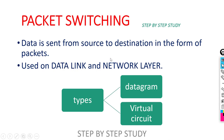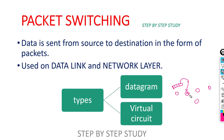If you have two communication devices, for example computer A sending data to computer B, then it will break that data into small packets. The packets will be transferred through switches. The packet will be stored, processed and then forwarded to the next switch, until the packet reaches the final destination. Data is sent from source to destination in the form of packets, and this works on the data link layer or network layer.